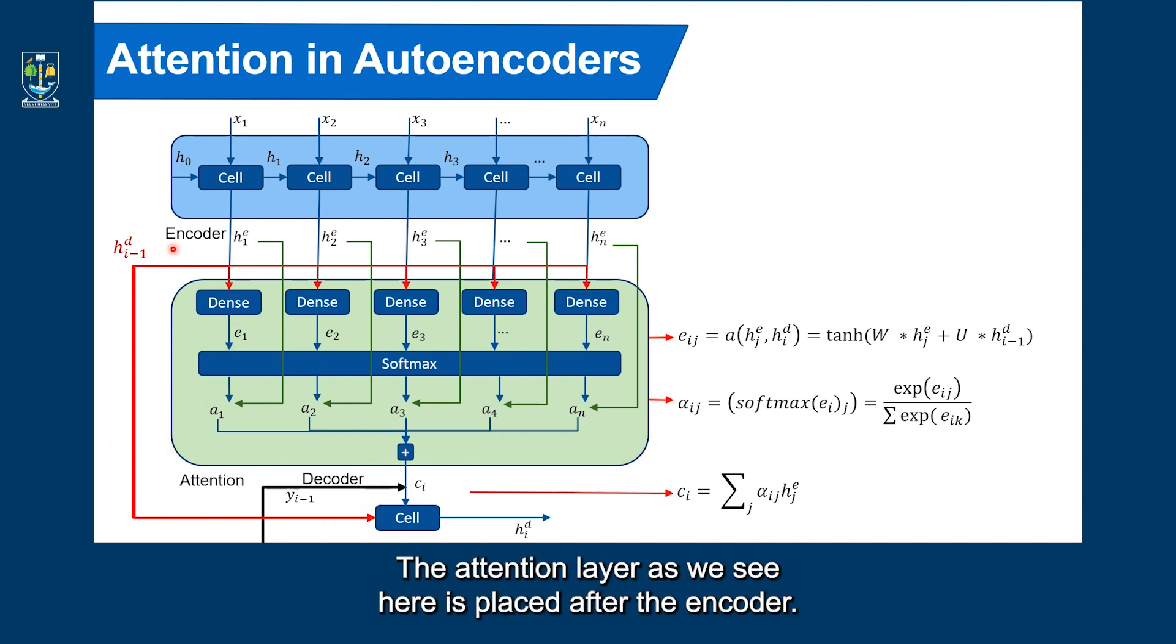The attention layer, as we see here, is placed after the encoder. The architecture, as you see, is very similar to what we have seen previously, with one key difference. The hidden state of the decoder is also involved into the mechanism of attention. So the model is able to decide where to focus, not only through the previous encoder hidden states, but also with the current decoder hidden state.